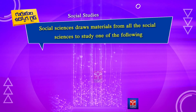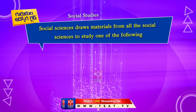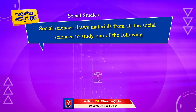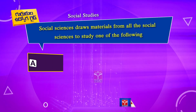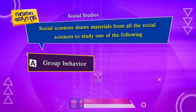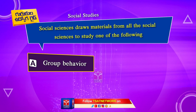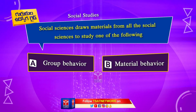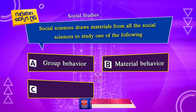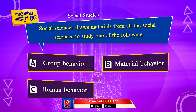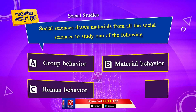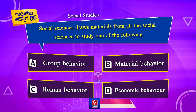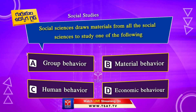Social Studies draws materials from all the social sciences to study one of the following: Option A. Group Behavior. Option B. Material Behavior. Option C. Human Behavior. Option D. Economic Behavior. Your time starts now.